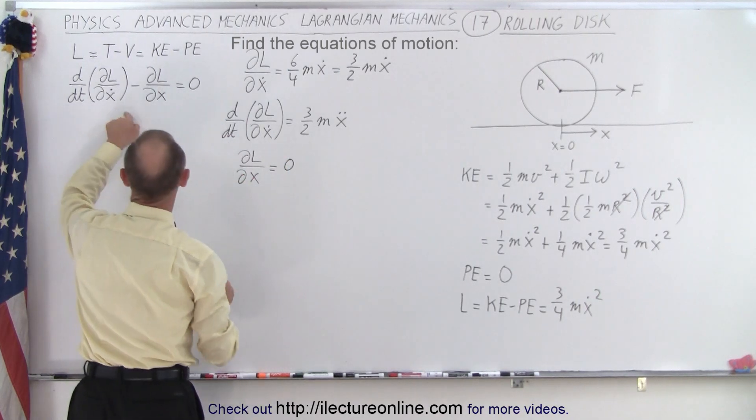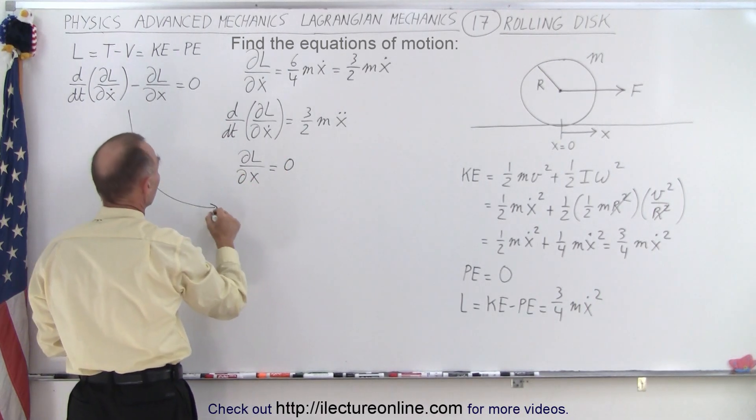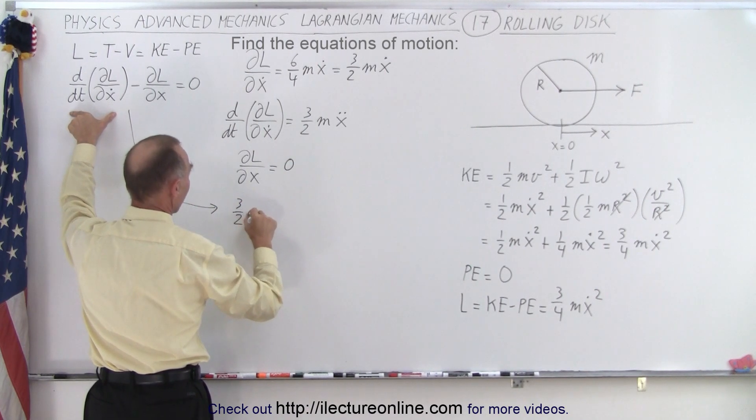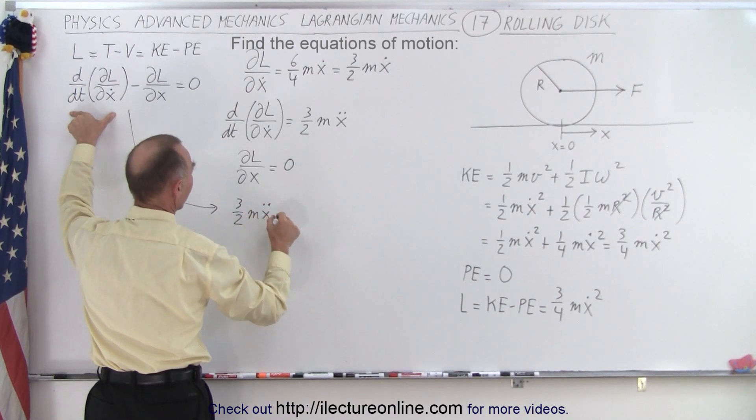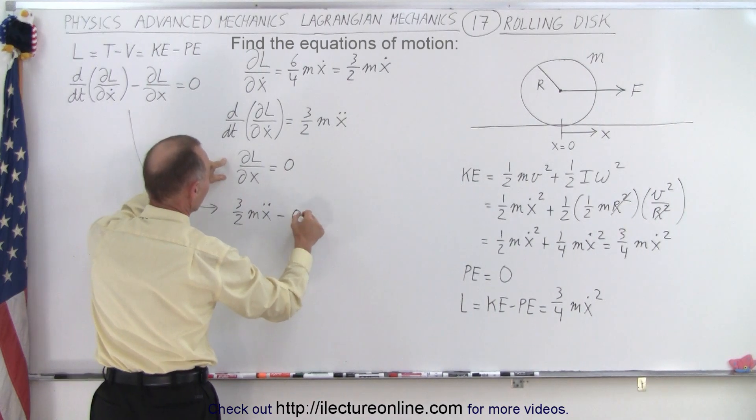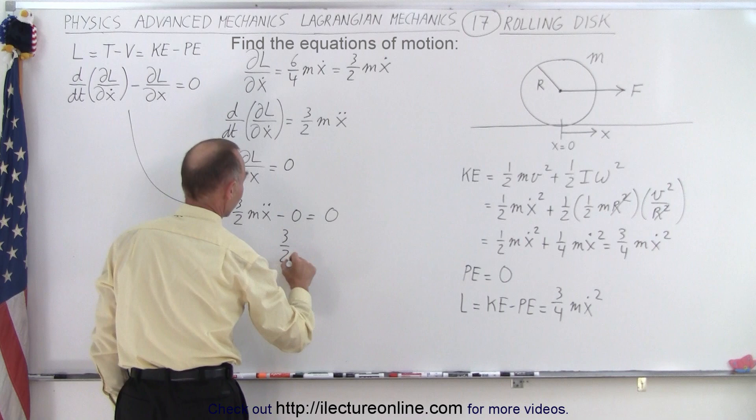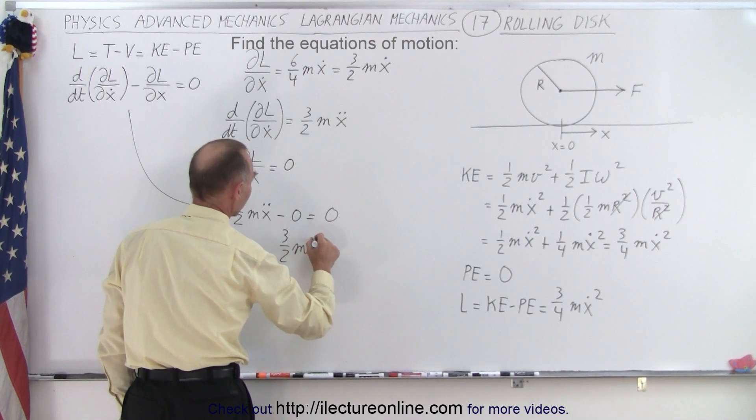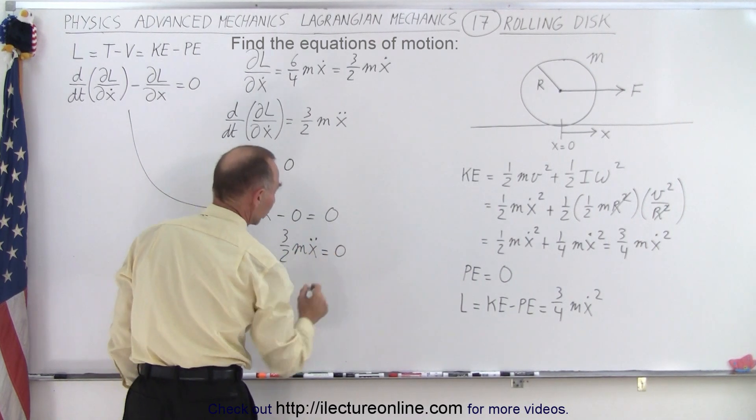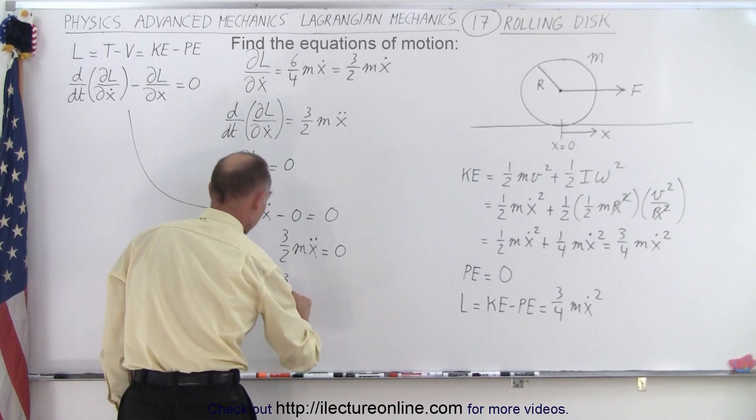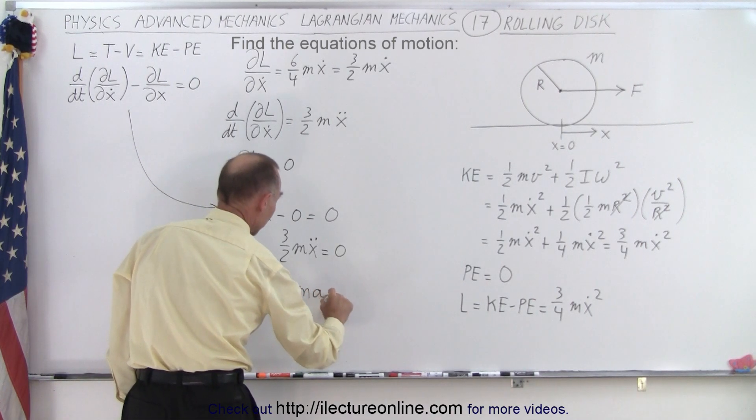And so then the equation here becomes the first part, which is three over two M x double dot, minus the second part, which is zero, equal zero, or three-halves M x double dot is equal to zero. And of course, if you then replace x double dot by A, you can write three over two M A equals zero.